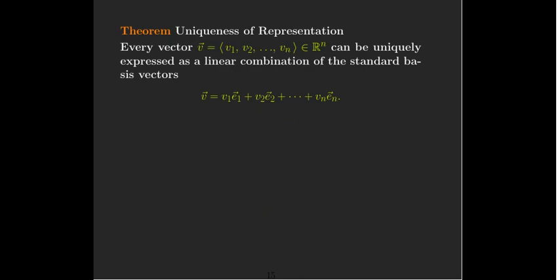Now, why are we talking about the standard basis vectors when we have a video about linear combinations? It's because any vector in Rn can be uniquely expressed as a linear combination of the standard basis vectors. And so, the coefficients are just the components of the vector.